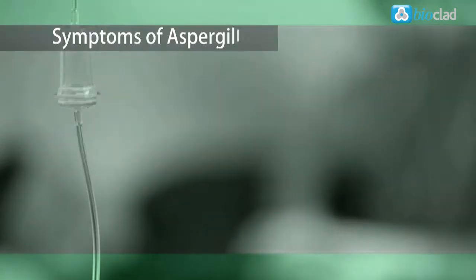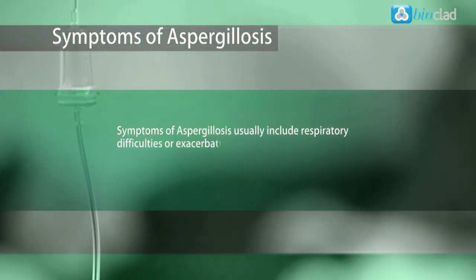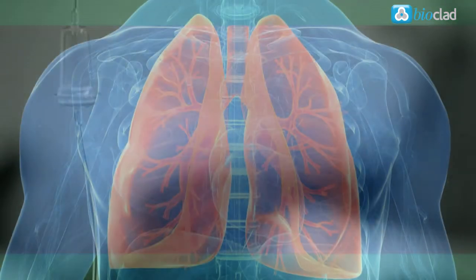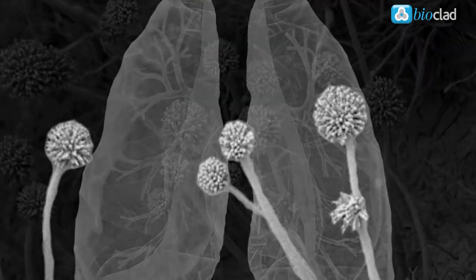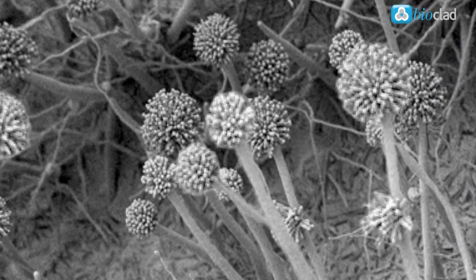Symptoms of aspergillus usually include respiratory difficulties or exacerbation of existing symptoms such as asthma. Infections can lead to fungi growing inside the lungs and sinuses causing chronic coughing, blocked sinuses and headaches.